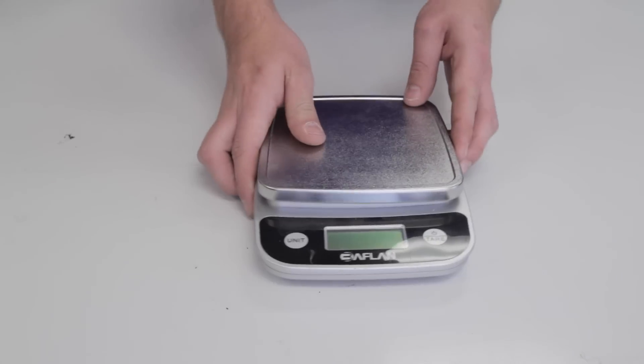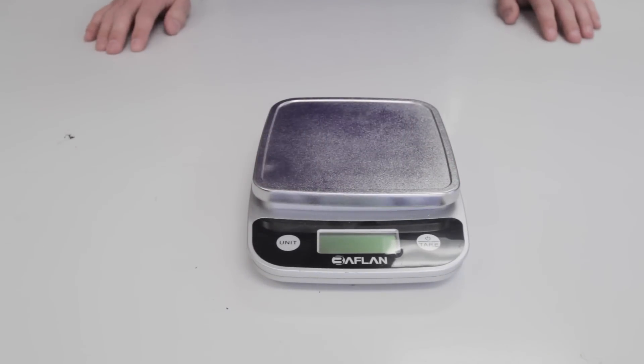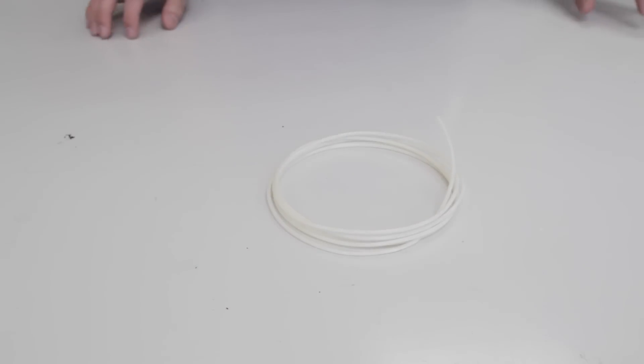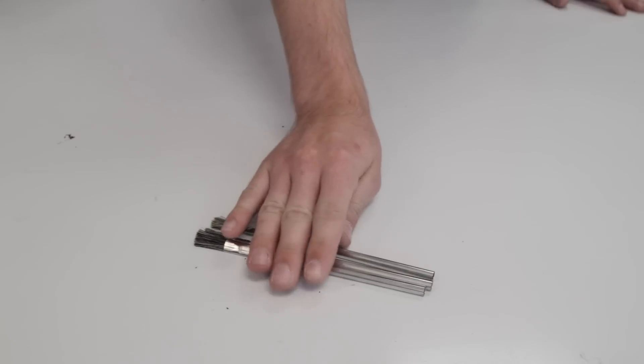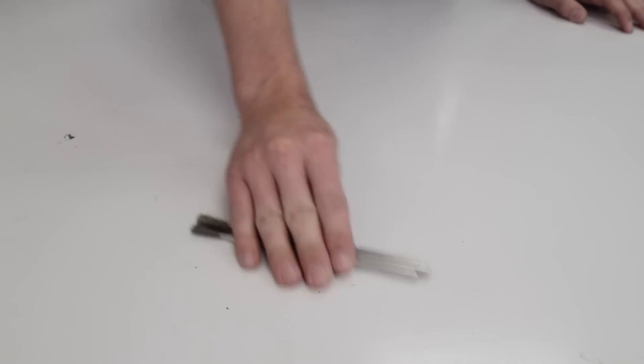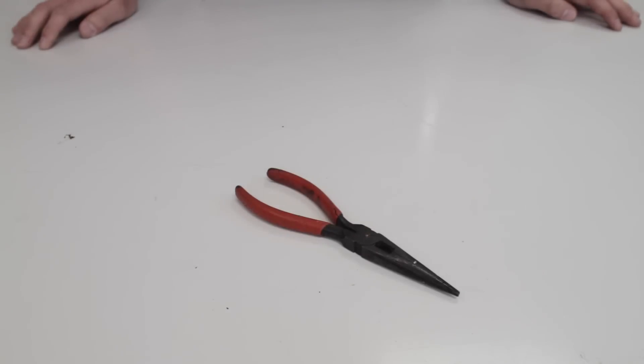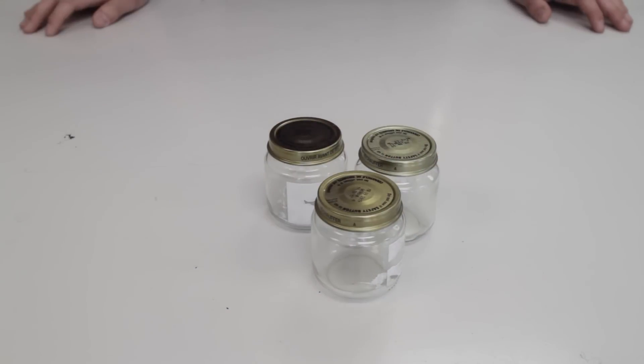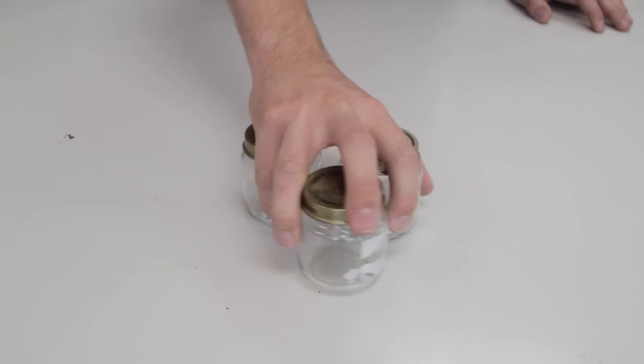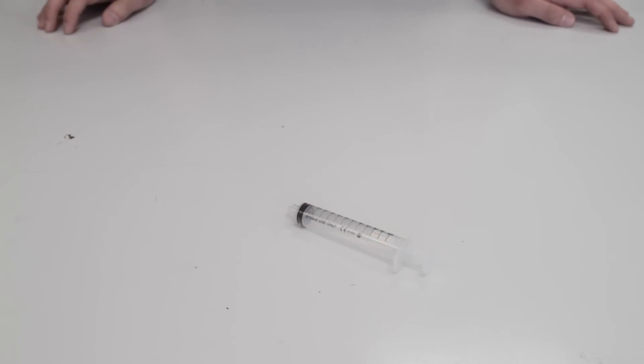A ruler or a digital scale that can measure in grams, ABS filament or scrap ABS prints, acetone, cheap brushes like acid shot brushes, wire cutters or snips, resealable glass jars or plastic containers that don't react with acetone, and a measuring cup or a measuring syringe.